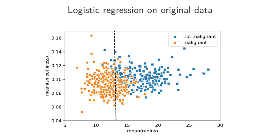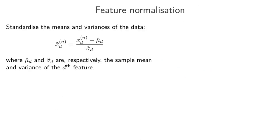One solution to this problem of scale is to rescale the features so that the scales for the different features are similar. For each of our n training inputs, we're going to take the d-th feature dimension, subtract the sample mean from that dimension, and then divide by the sample standard deviation. There's a small note: that squared term is the sample variance of the d-th feature. If we do that, then for each of the dimensions we will have, over our dataset, a mean that's approximately zero and a variance that's approximately one for each of the feature dimensions.